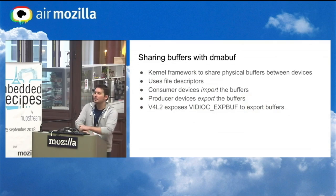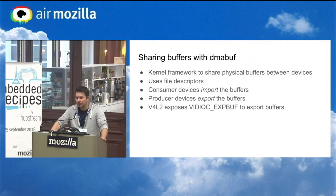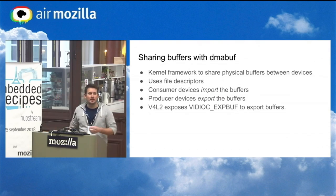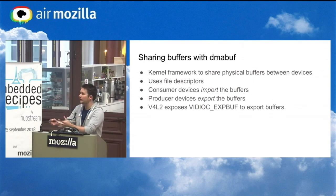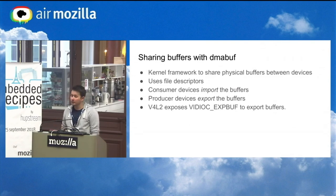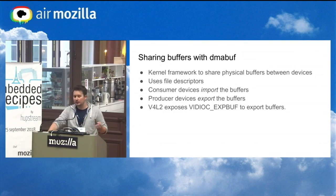Another thing to discuss before rendering techniques is sharing buffers with DMA-buf. DMA-buf is a kernel framework that allows you to share physical buffers between devices. For example, you can share a buffer from the video decoder and send it to the DRM KMS display driver. It uses file descriptors, making it a very easy framework. You can have consumers that import buffers, or producers such as the video decoder that export the buffer. In V4L2, there is an ioctl called VIDIOC_EXPBUF that allows you to export DMA-buf file descriptors.